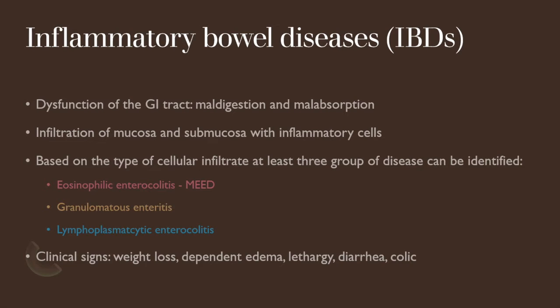It usually requires medical treatment, but sometimes the gut distension can progress to displacement or torsion. Sometimes these infiltrates can cause stenosis of a segment of intestine — the so-called mural bands in eosinophilic enterocolitis — and the colic pain can also be severe and necessitate surgery.